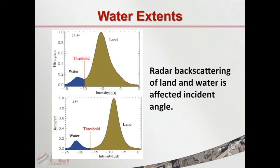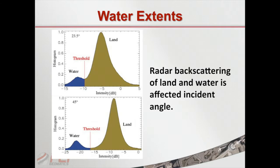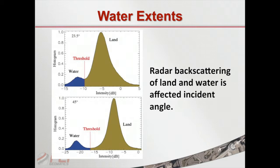There's one other effect we really have to worry about, and that's the effect of incidence angle. This one's a little more subtle — when I showed the previous slide, the land didn't move, it was the water histogram that shifted. But here they both shift. As you look at different incidence angles, the backscattering from both land and water changes at different rates. At 23 degrees the water and land are a little harder to separate, whereas at 45 degrees it's a little easier.